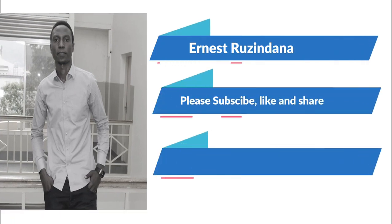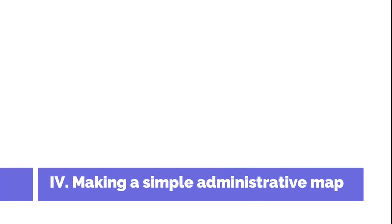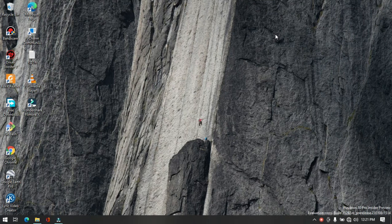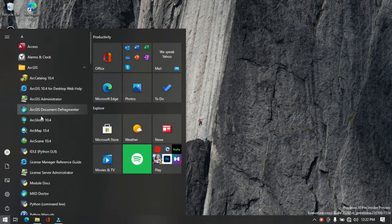Hello guys, welcome to my channel. This session will show you how to make a simple administrative map. We will be based on the output data generated from the previous session, but you can make some exports and clips to support the task. In the previous video, we generated district boundary, roads, district legs, district health centers, and so on. Now we are going to use those data to make a simple administrative map.